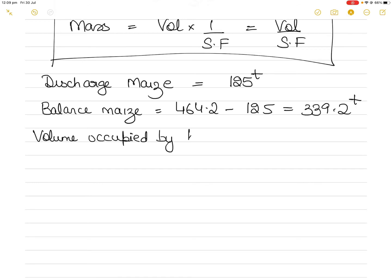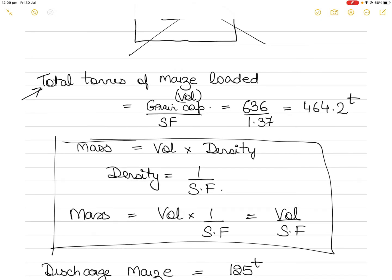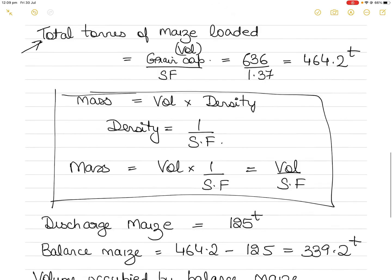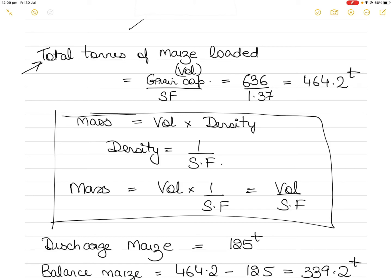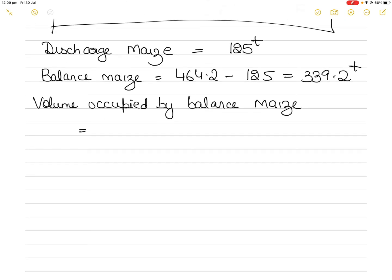Now, how much volume is this remaining maize occupying? Volume equals mass multiplied by stowage factor. So volume occupied by balance maize is 339.2 tons multiplied by 1.37, which gives 464.7 cubic meters.